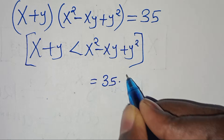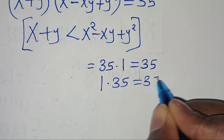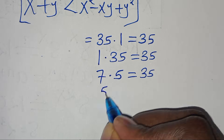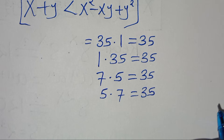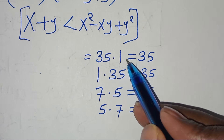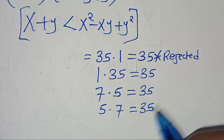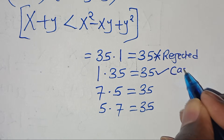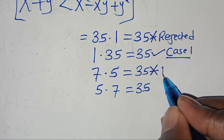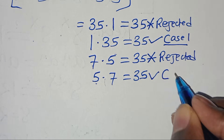35 can be factored as 35 × 1, 1 × 35, 7 × 5, or 5 × 7. We need x + y to be less than x² - xy + y². So 35 > 1 violates that condition — rejected. But 1 < 35 satisfies it — this is Case 1. And 5 < 7 satisfies it — this is Case 2.